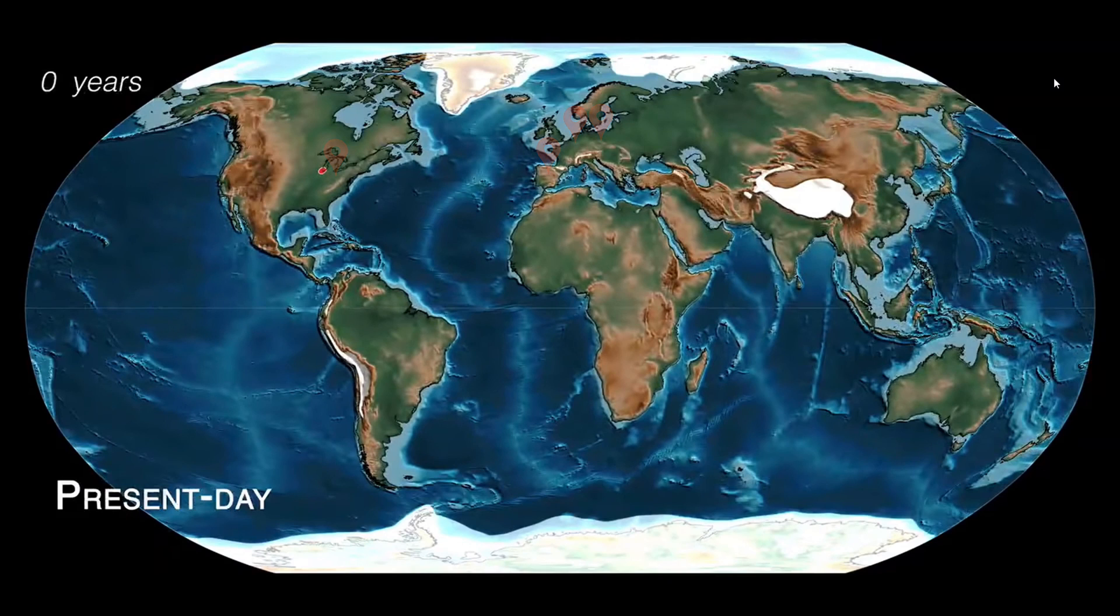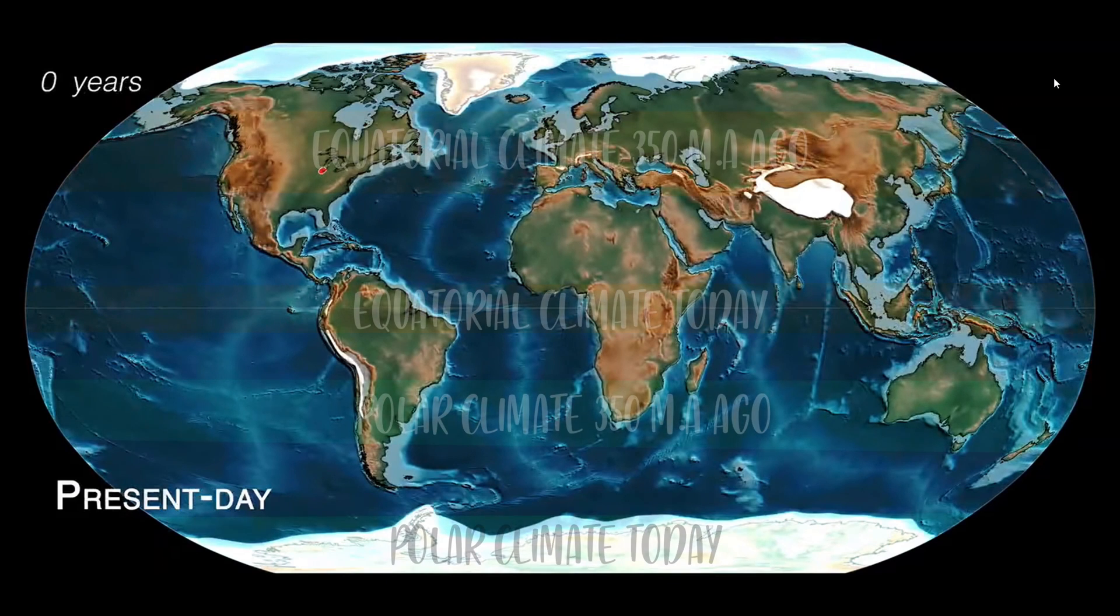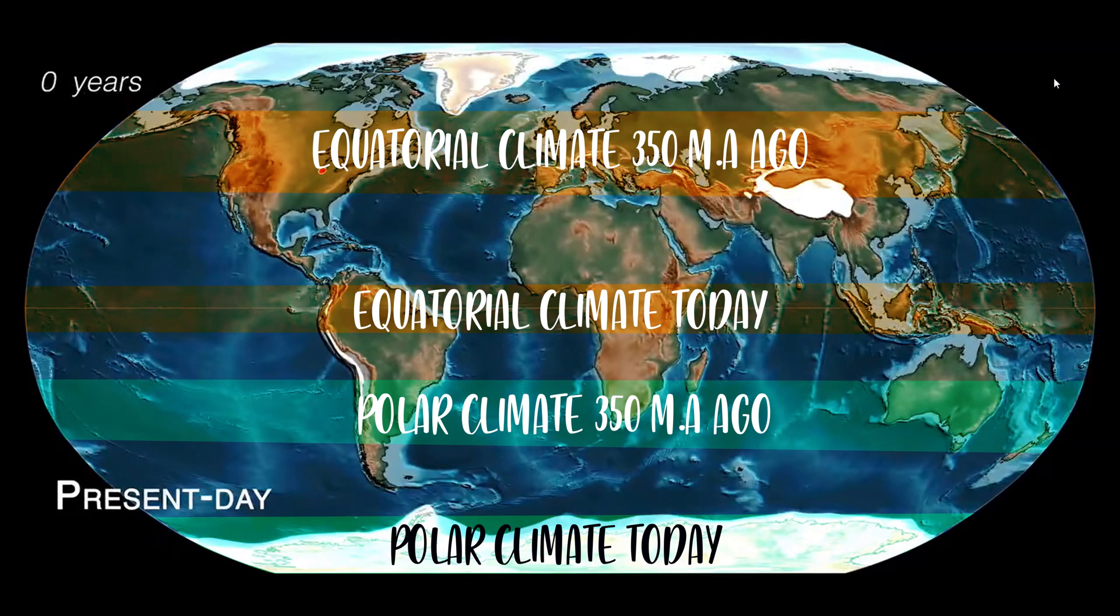So it was strange that there were glaciers in the south of Africa, but not in the equivalent latitude of the northern hemisphere. And it was also strange that regions today that have temperate climates had equatorial climates. Climates follow a north-to-south logic of going from colder to warmer. It made no sense that there were glaciers where there are now deserts, and that there were warm climates where there are now temperate ones.